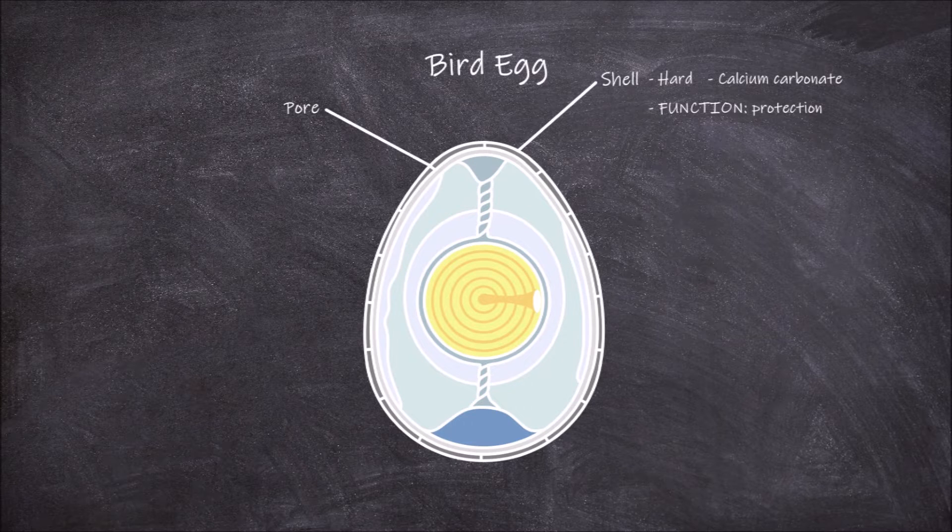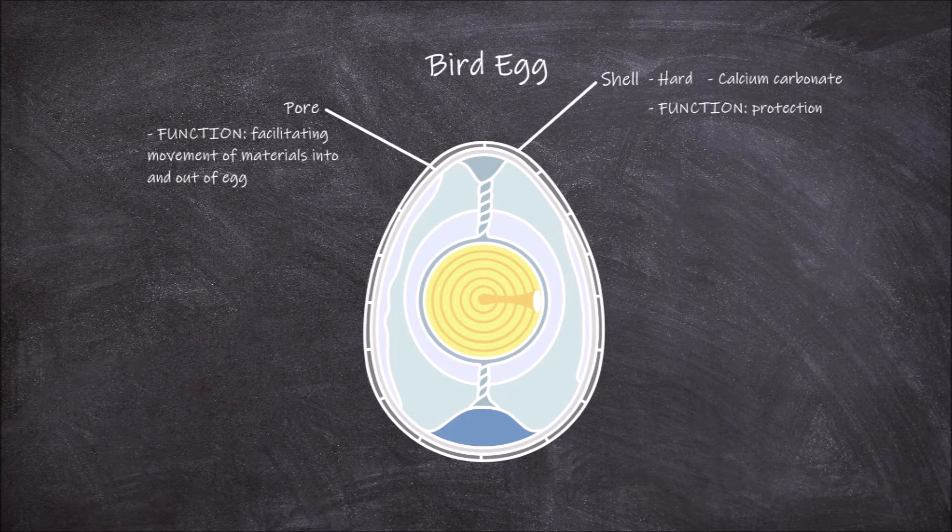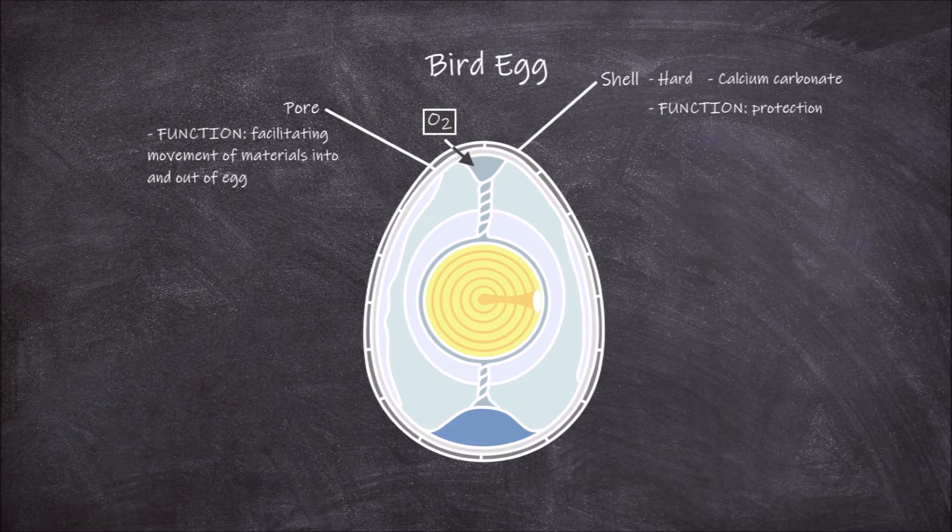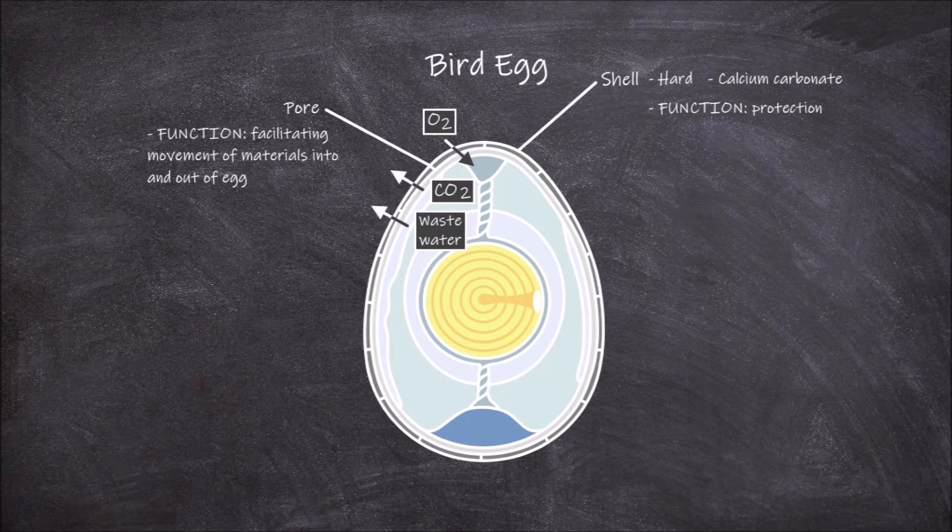The shell is porous. It is covered with thousands of very tiny pores that make it a semi-permeable membrane. The embryo inside requires oxygen for respiration and growth and produces waste products including carbon dioxide that needs to leave the egg. The function of these pores is facilitating the movement of materials into and out of the egg through the shell. These pores allow for the movement of oxygen into the egg and unwanted waste fluids and carbon dioxide out of the egg.